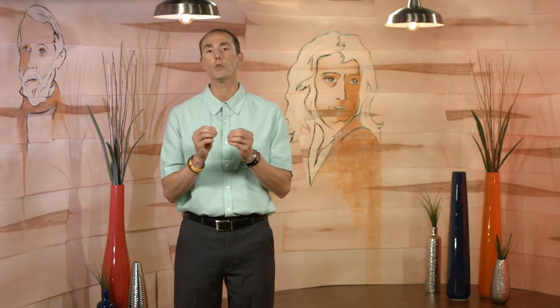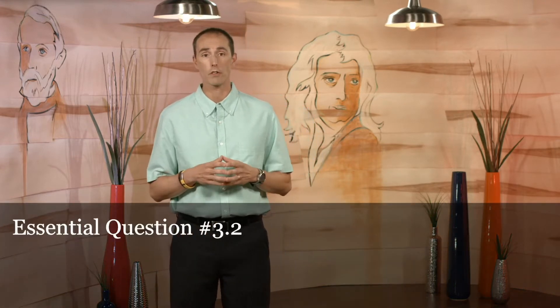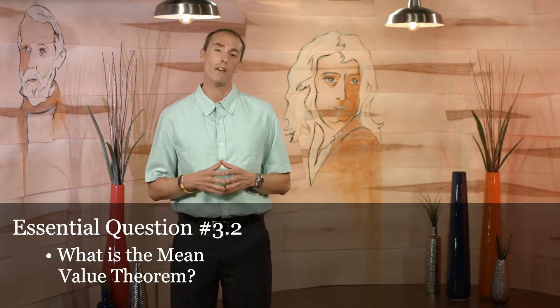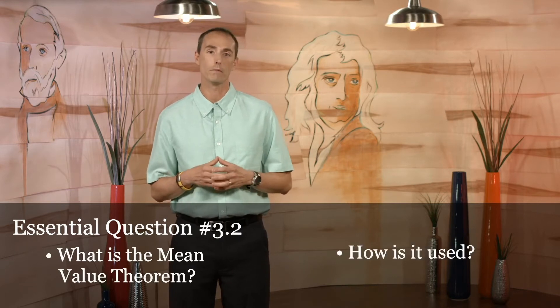Hi, I'm Paul Battaglia. This is Section 3.2. Students come into Section 3.2 knowing how to find the slope of a secant line and the slope of a tangent line, but now it's important we show them why we want to know when those two might be equal. That brings us to the mean value theorem. The essential question we'd like students to answer at the end of Section 3.2 is: what is the mean value theorem and how is it used?